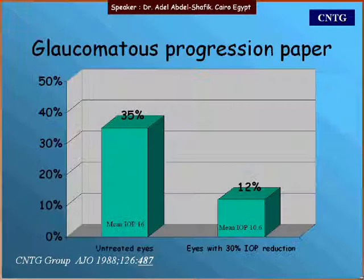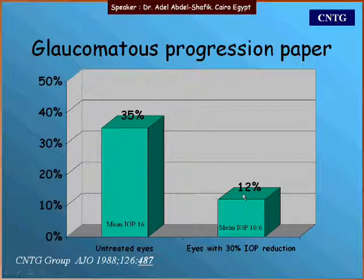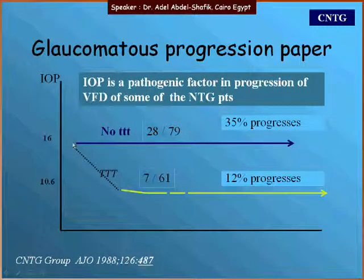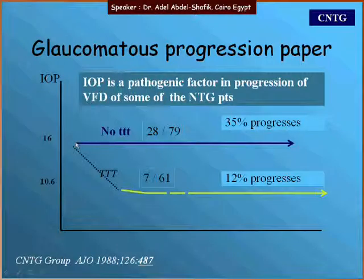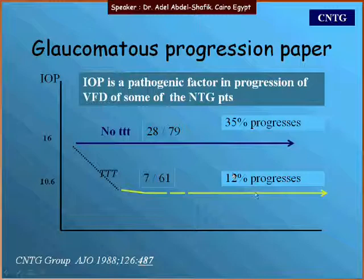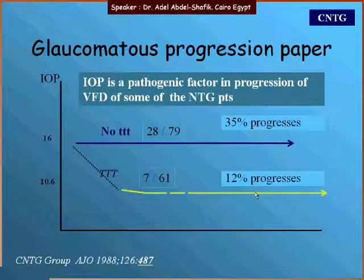Progression was found to be 35 percent in the untreated arm and 12 percent in the treated arm. In the untreated arm, the visual field at randomization was the baseline, whereas in the treated arm, new fields were taken after the 30 percent IOP reduction as the starting point. This comparison demonstrates that when IOP remained higher, 35 percent progressed, versus only 12 percent when IOP was lowered, indicating that IOP is a pathogenic factor in the progression of normal tension glaucoma in some cases.